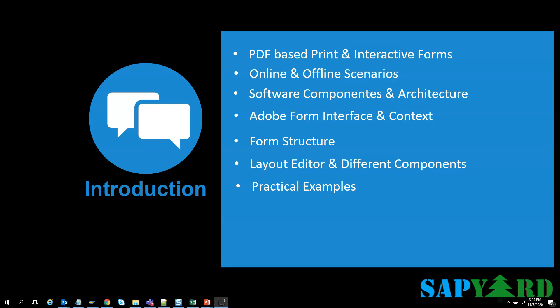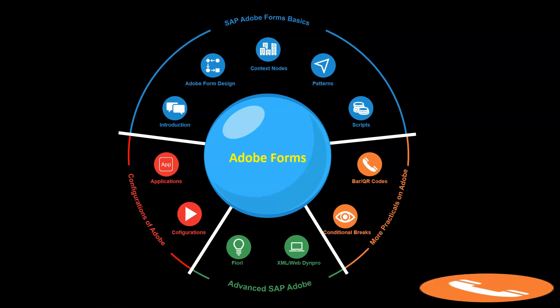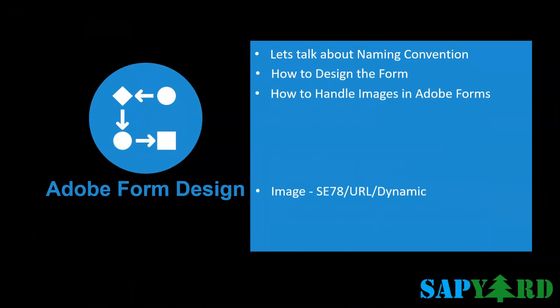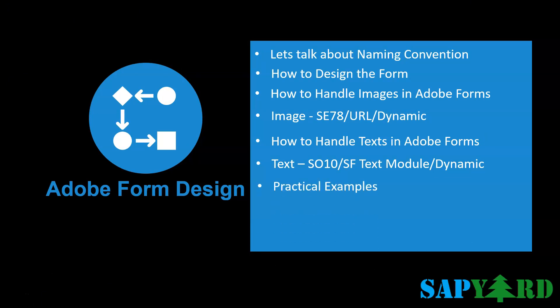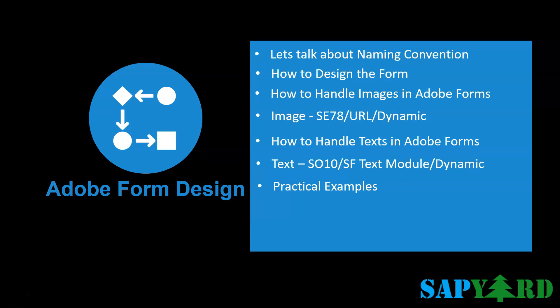All topics will be followed by practical examples. Next, we will talk about the common naming conventions and industry standards in Adobe Form. We will learn how to design the form and handle images in Adobe, covering images from SAP Repository via Tcode SE78, images via URL, and dynamic handling of images. Just like images, handling text in SAP Adobe Form is a requirement in every Adobe we design. We will learn how to handle standard text via Tcode SO10, Smart Form text modules, and dynamic texts.